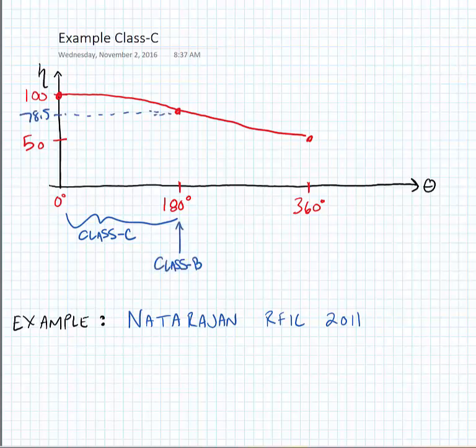As the conduction angle continues to increase, we have what we would call a Class-AB, and ultimately as the conduction angle reaches 360 degrees, we have a Class-A amplifier where the efficiency is 50%.